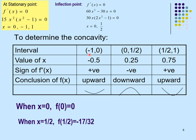For curve sketching, from −1 to 0 the curve is concave downward. From 0 to 1/2 it is concave downward slightly. From 1/2 to 1 it is concave upward. Don't forget to label the graph with relative maximum, relative minimum, y-intercept, and inflection points.